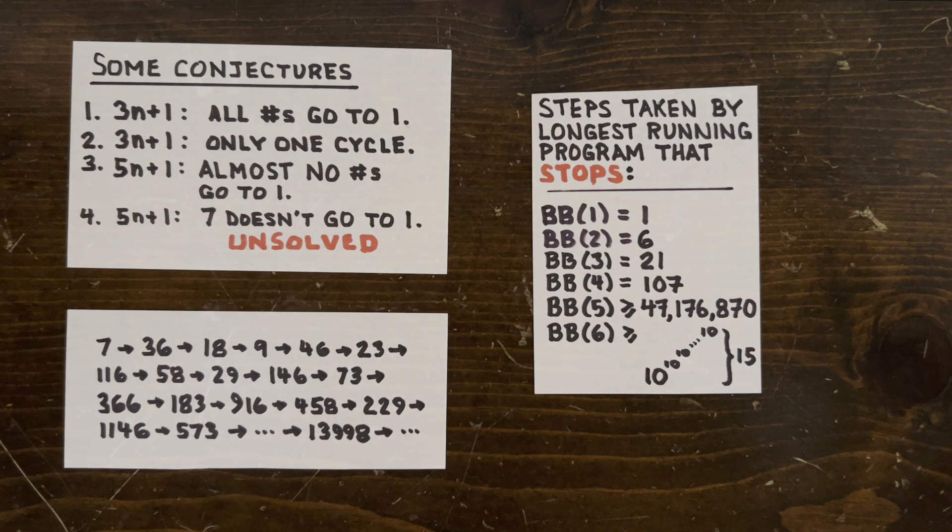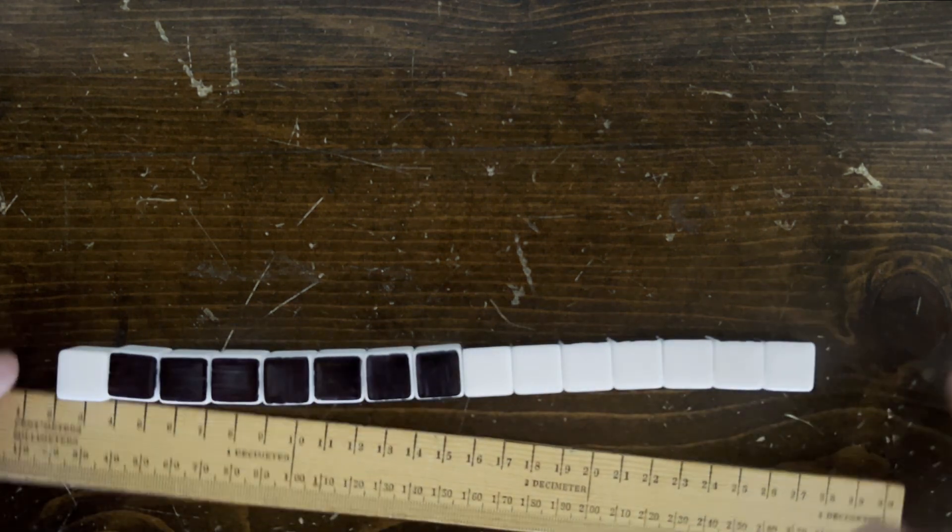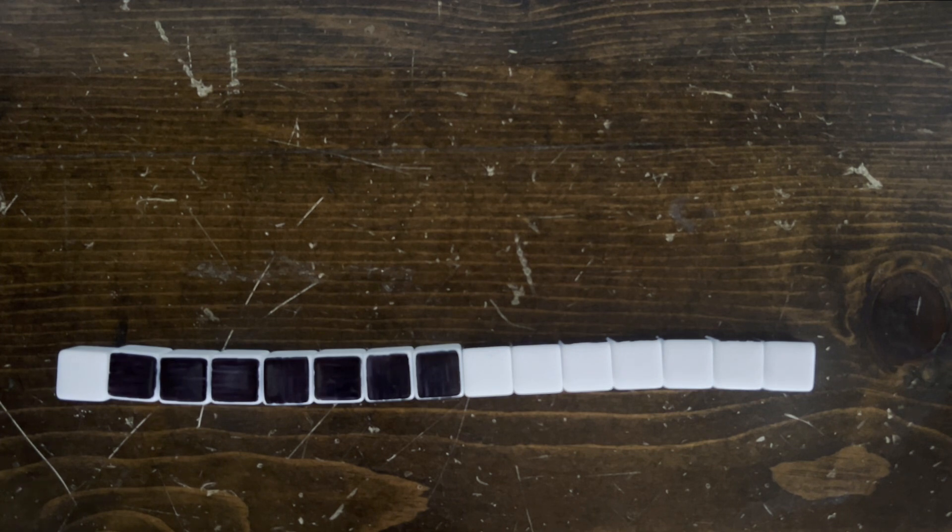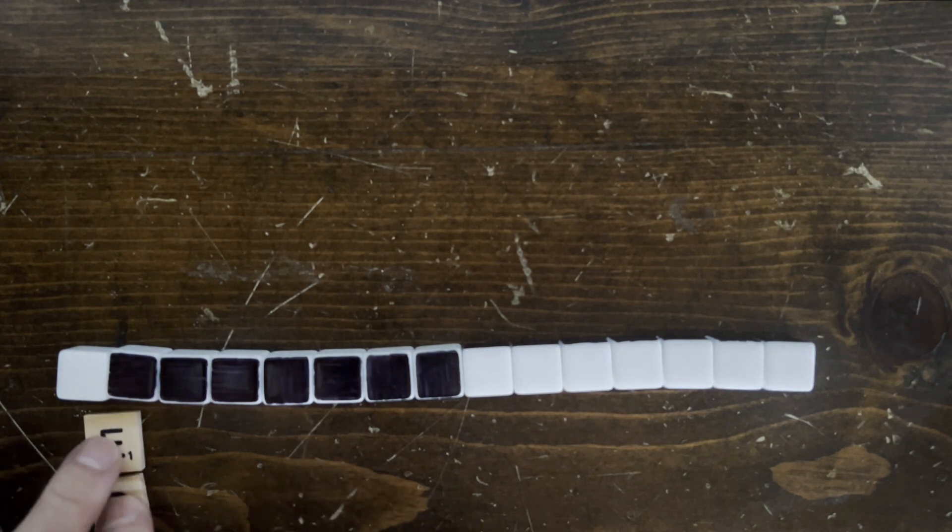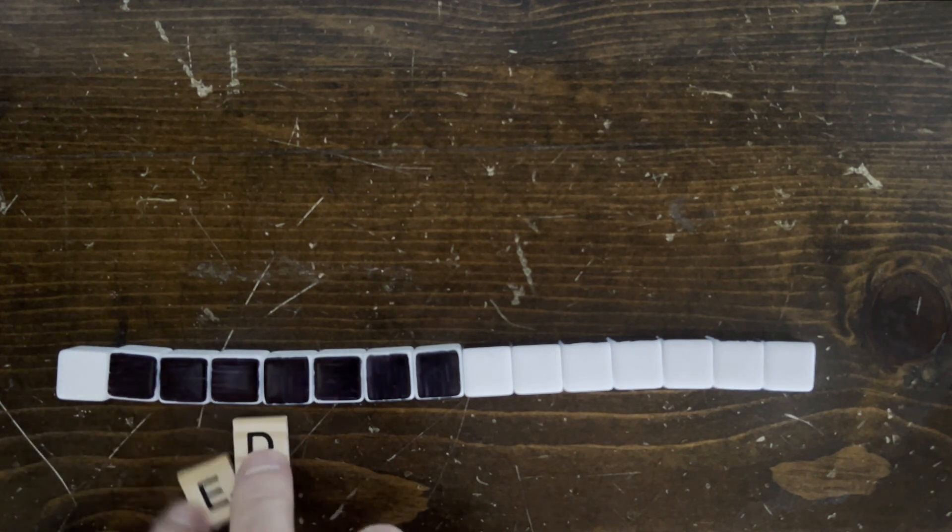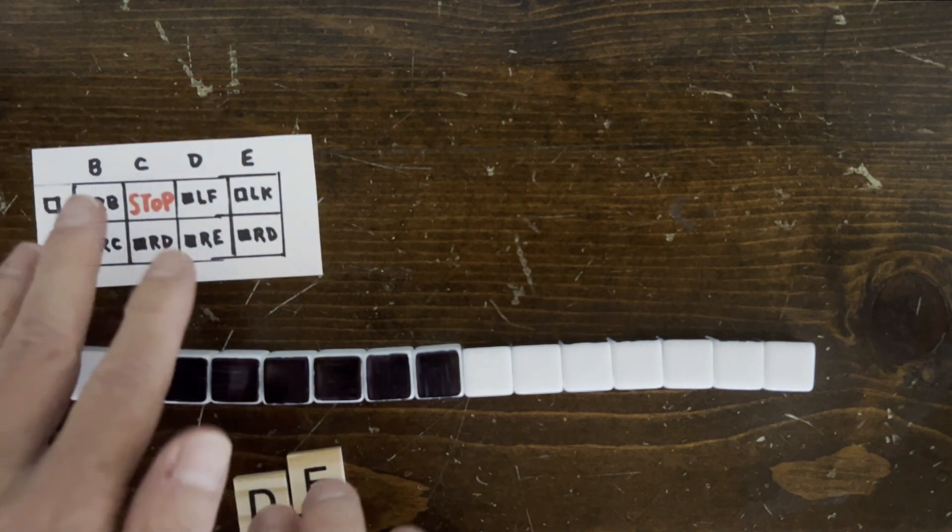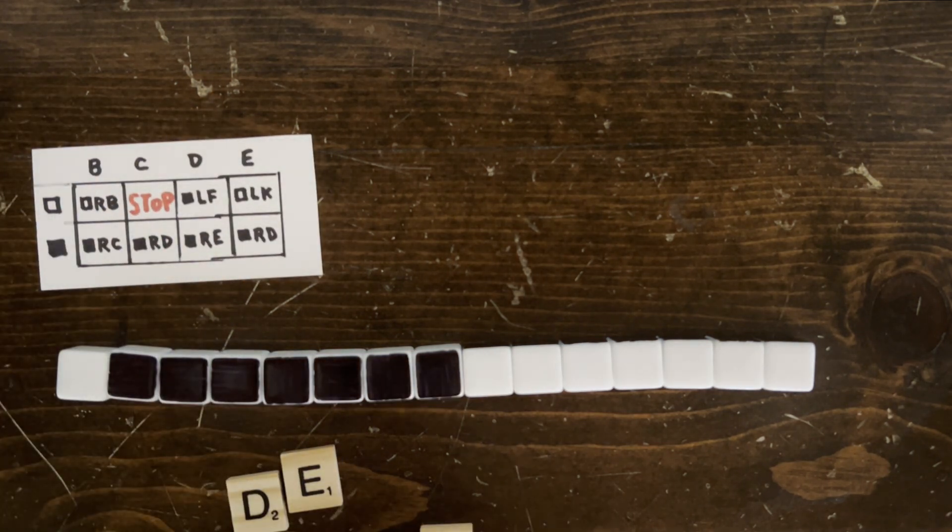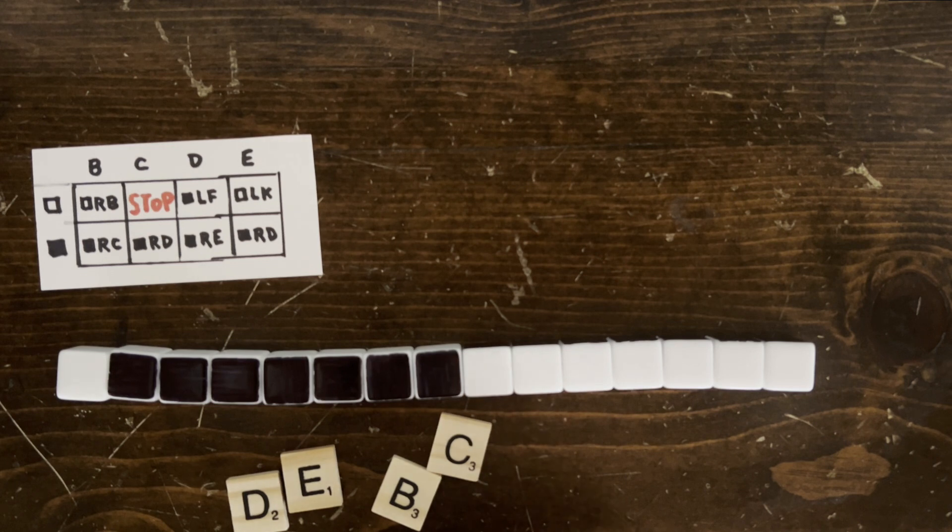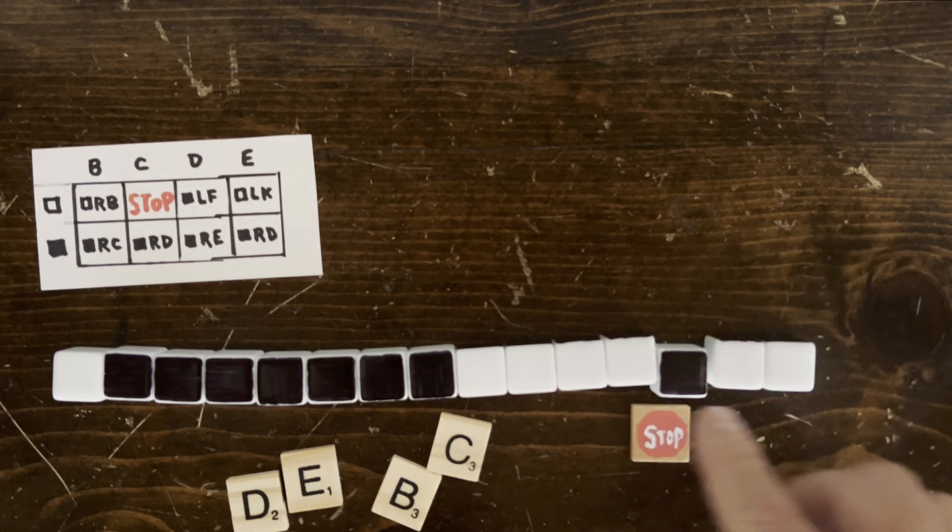So, a first idea is to put 7 ones onto the blank tape. Then traverse it to figure out if it's even or odd. And we can do that with states D and E, which flip-flop until a white cell is reached. If we add states B and C, we can also halt if 1 is reached.